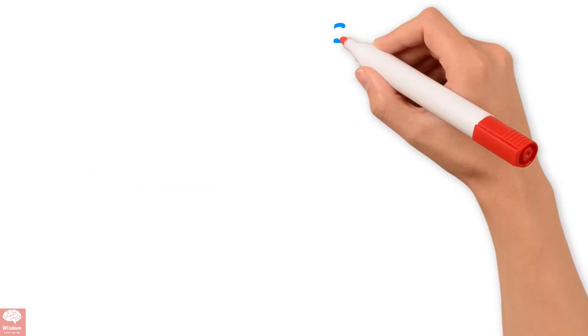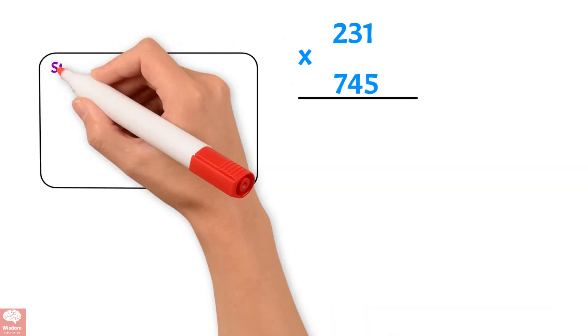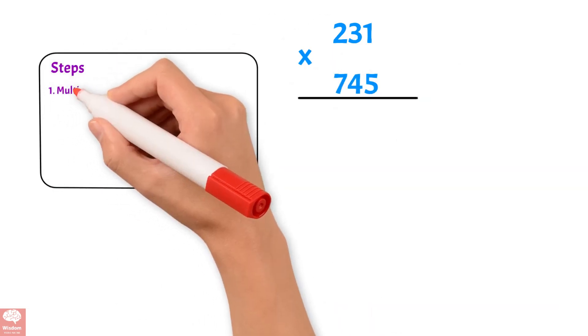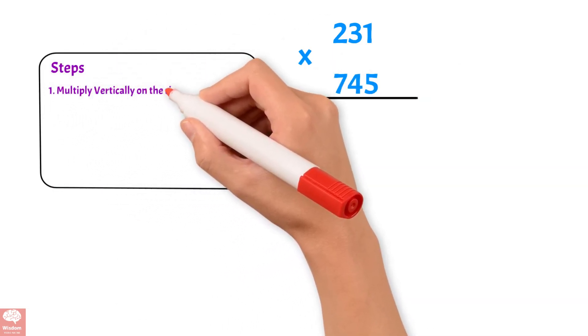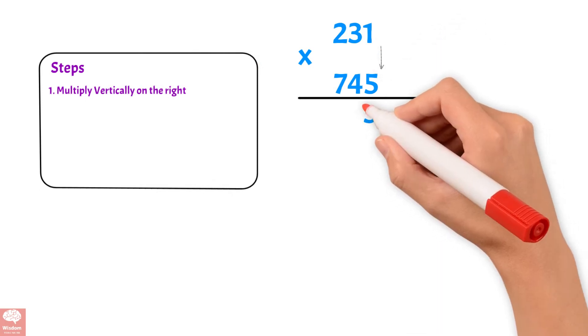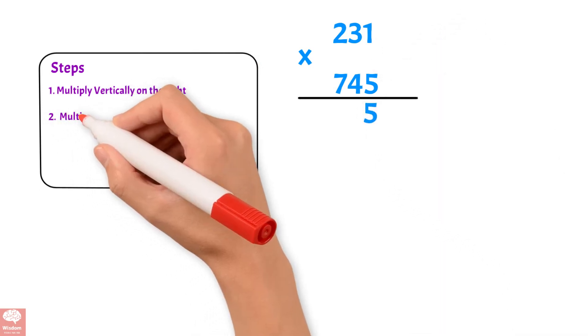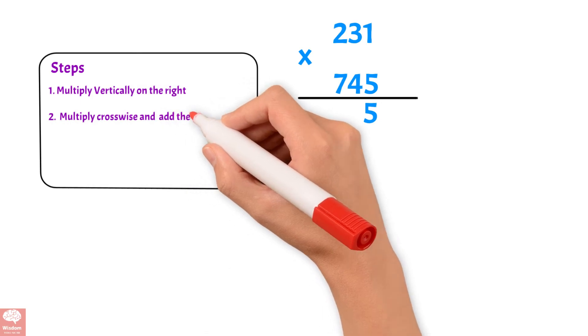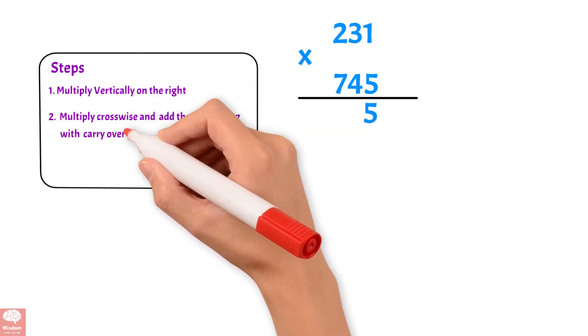Let us see the next example: 231 times 745. Step 1: Multiply vertically on the right. 1 times 5, we get 5. Step 2: Multiply crosswise and add the sums along with carryovers if any.